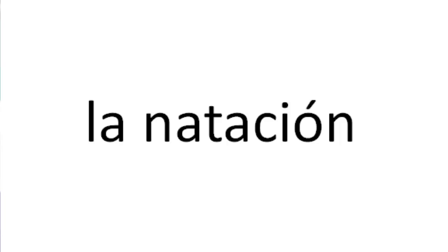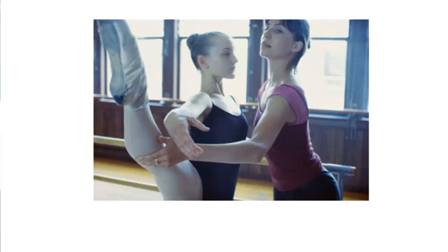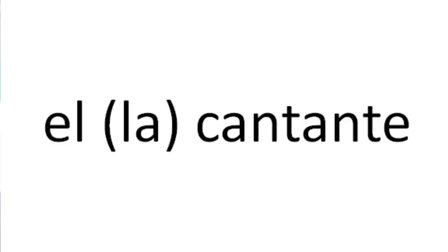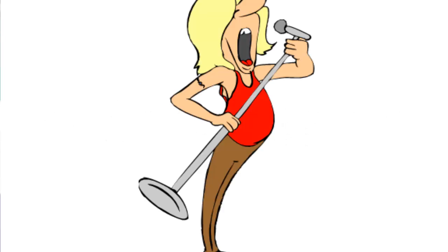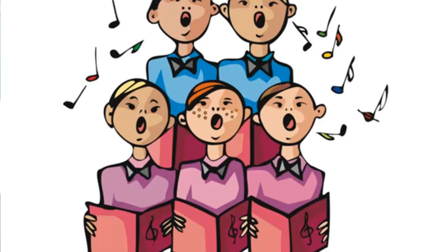La natación. La banda — that one should be pretty easy. El bailarín — we see the verb bailar in there, so a bailarín is a dancer, and a bailarina is also a dancer. La bailarina, el bailarín. El cantante, la cantante — from cantar. Repite: el cantante, la cantante. El coro. Repite: el coro. Hay cinco personas en el coro.